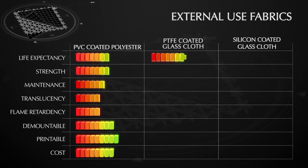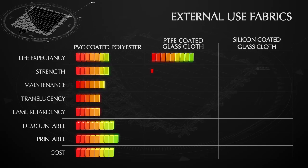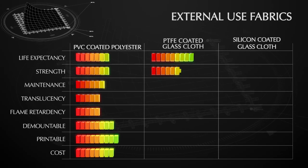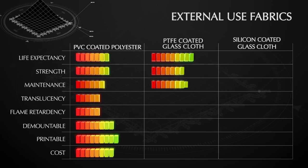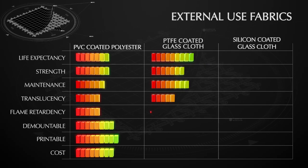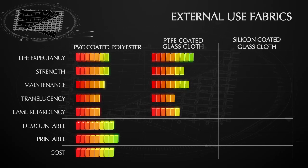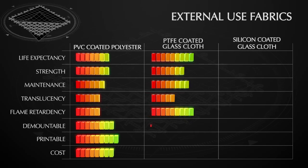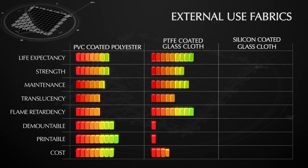In contrast, PTFE coated glass cloth offers durability, strength and class O flame retardancy. However, it is not suitable for demountable structures and is one of the more expensive fabrics we offer. PTFE coated glass cloth is often used in harsh climates, such as desert environments, due to its ability to withstand high levels of UV and sand abrasion.